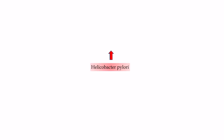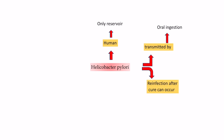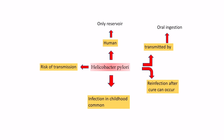Humans are the only known reservoir for Helicobacter pylori. It is transmitted by oral ingestion. Once infection is cured, there is no protective immunity, and re-infection can occur. In developing countries, infection usually occurs in childhood. H. pylori infection can transmit directly from person to person; hence family members and healthcare workers are at risk.